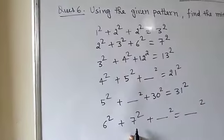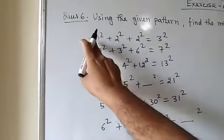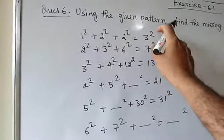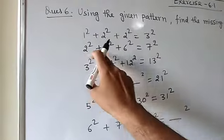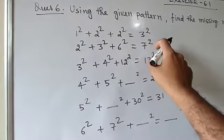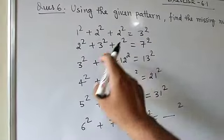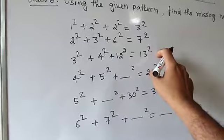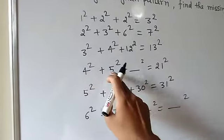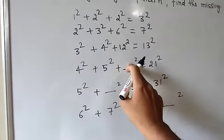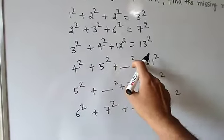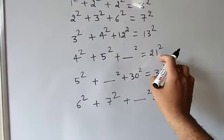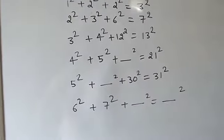If you follow the pattern: 1² + 2² + 2² = 3², 2² + 3² + 6² = 7², 3² + 4² + 12² = 13², then 4² + 5² + [missing]² = 21². You need to find which number's square goes in the missing place.